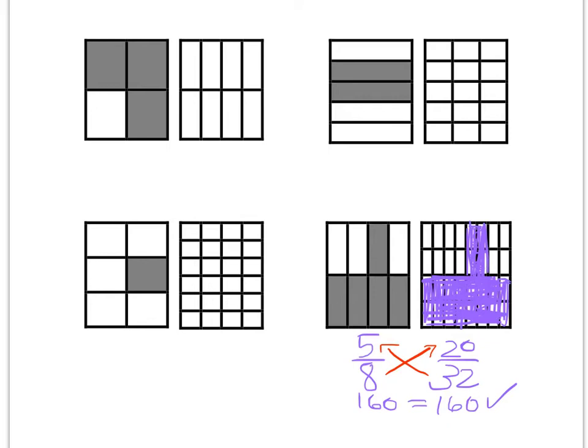The 160 doesn't have any actual value, but it shows that if we get from cross multiplication, if we get both sides equal, it means that this ratio of 5 eighths is equivalent to this ratio of 20 thirty-seconds. So that's basically what you're doing on this front side. Pretty easy stuff. Let's go ahead and move on to the back side.